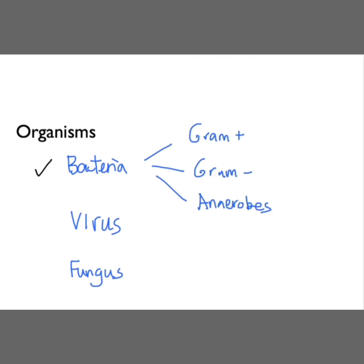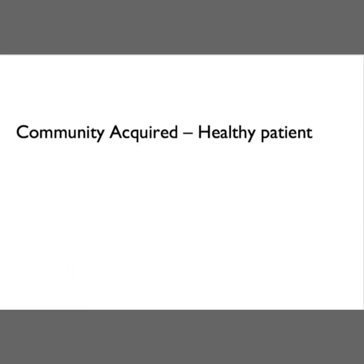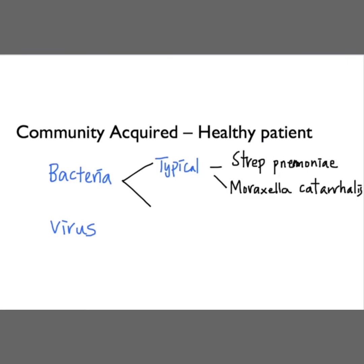Let's talk about our most basic patient: a healthy patient who comes from home and lives independently — community acquired pneumonia. Bacterial infection is divided into typical or atypical bacteria. Typicals are the ones that give the most typical signs and symptoms. These bacteria include Strep pneumoniae, Moraxella catarrhalis, and Haemophilus influenzae, or H. flu for short. Of the three typical bacteria, Strep pneumoniae is the most common cause of typical community acquired pneumonia.